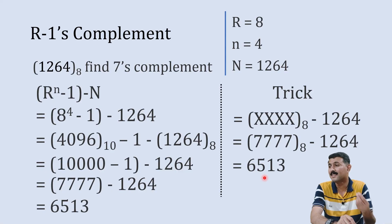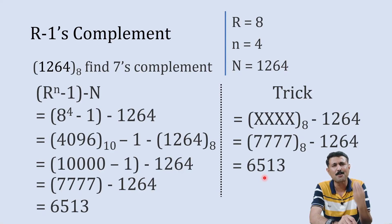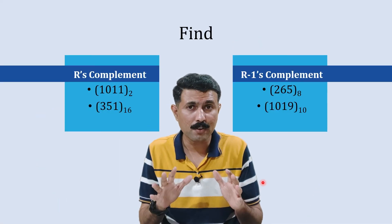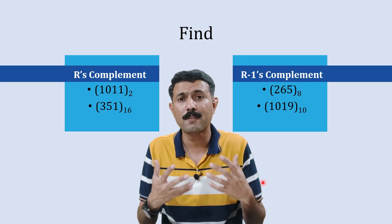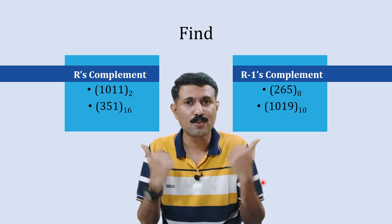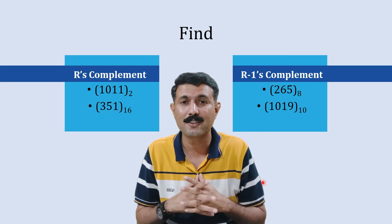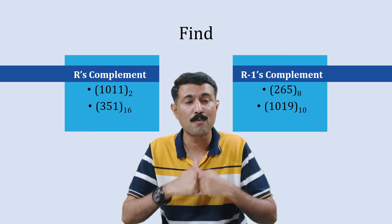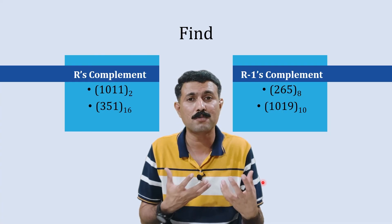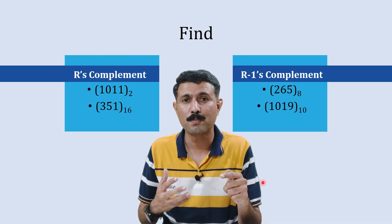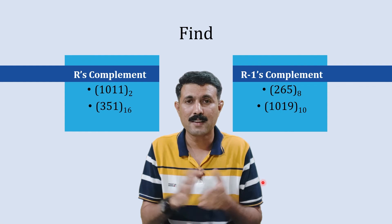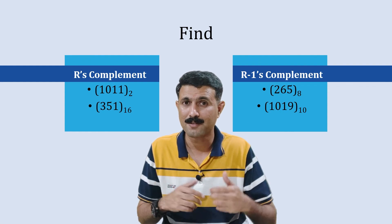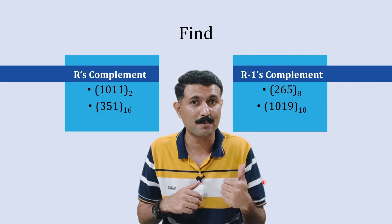Using this trick, you can solve any r or r-1's complement in 20 seconds. Solve the practice examples given and write your answers in the comments. If you want to learn more about digital electronics, watch the playlist or join the Telegram group. If you enjoyed this video, hit the like button and subscribe.